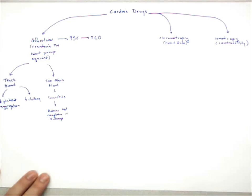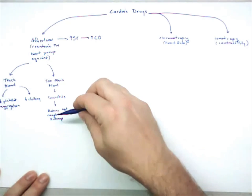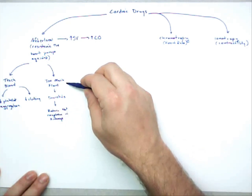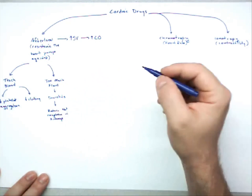Think about it this way: if you eat a bunch of popcorn, you're eating a lot of sodium, and water follows it. Sodium and water tend to stick together. So if you can reduce sodium uptake in the kidneys, you're also reducing water uptake, which means you're going to get rid of fluid.